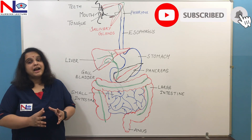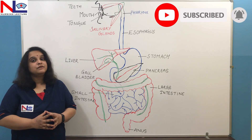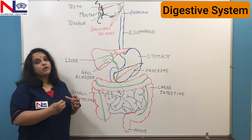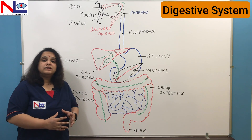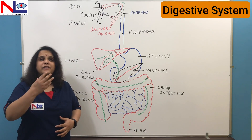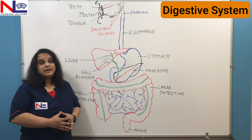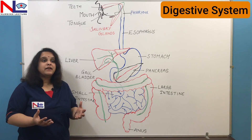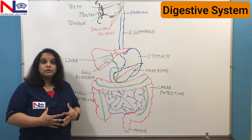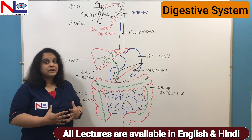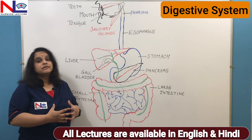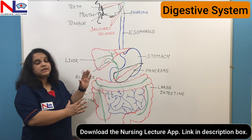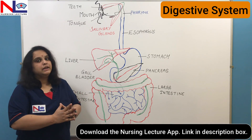Hello everyone, today in this lecture I'm going to talk about the system that gives us energy — the digestive system. As you can see on the board, I have drawn the important organs associated with this system. This organ plays a very important role in our body because whatever we eat is mechanically or chemically digested, broken down, and goes into our blood and lymph, finally reaching our cells. Thereby we get energy, nutrients for growth, and these nutrients also help in wound healing.